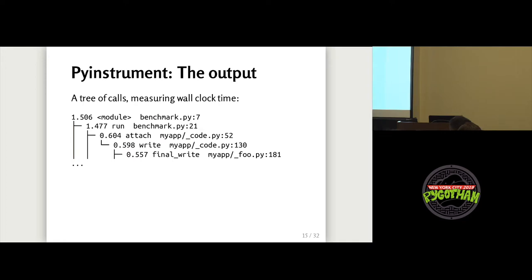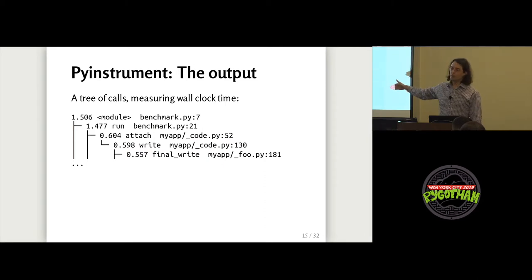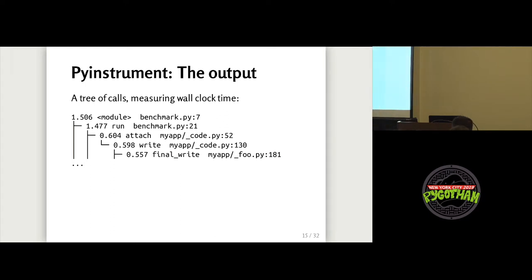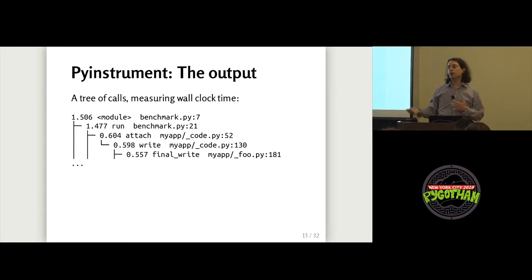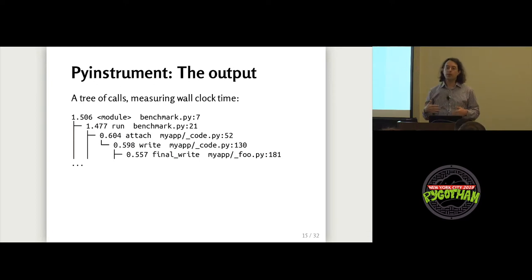Like CProfile, PyInstrument has a Python API so you can profile a particular function or class in a Jupyter notebook without profiling a whole program. The output it gives you is a tree of calls, which is immediately an improvement over CProfile's default output — you can see that this function was called by this function, which was called by this function. You can see the context of where your slow code is. Next to each function it shows elapsed time in seconds, not CPU time, so you can see for example that 0.557 seconds out of 1.5 total seconds was spent in a particular call.